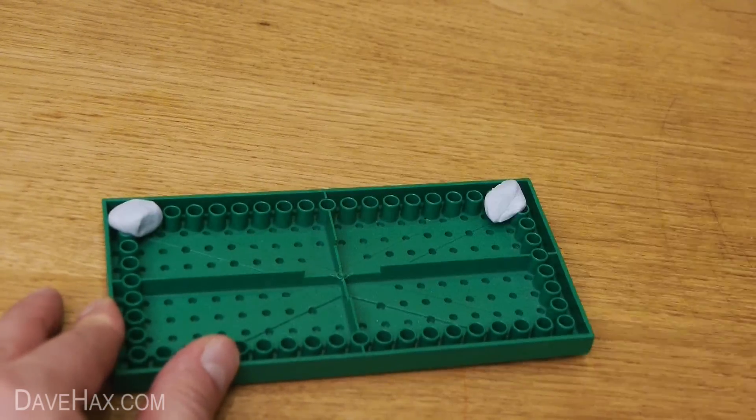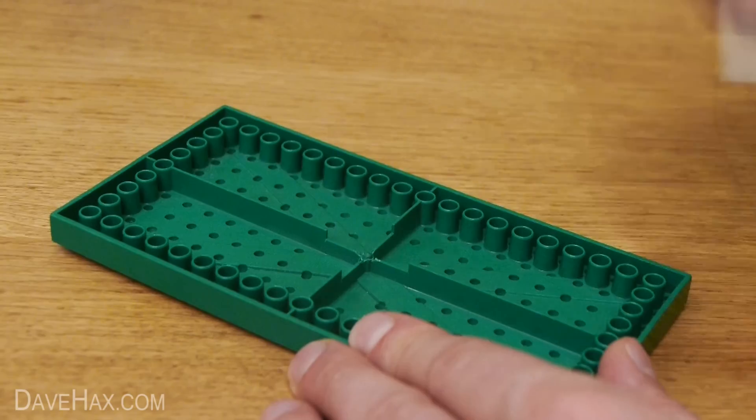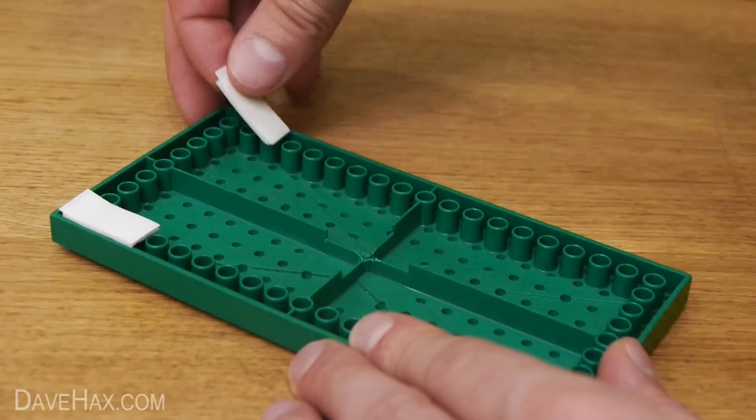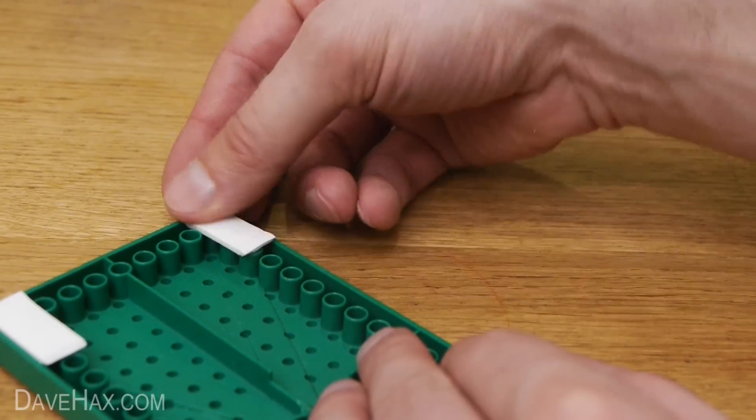I'm going to use blue tack, which is like a putty adhesive for posters, but you could use double-sided adhesive pads or even drill through the Lego and fix it in place with some screws.